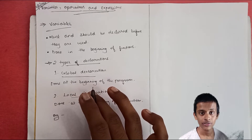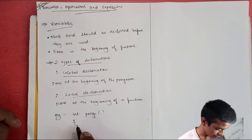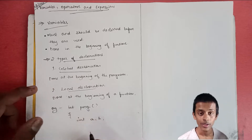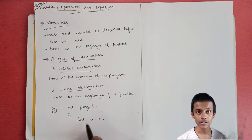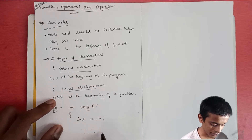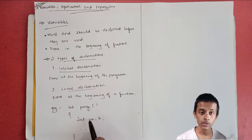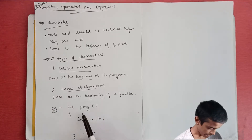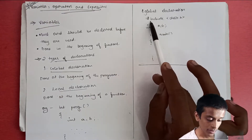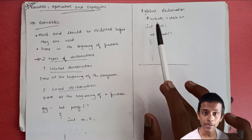Say there's a user-defined function — 'int program' — you open the curly bracket. If you write 'int a, b' here, you're declaring variables a and b as integers. This is done at the start of a function, before any executable statement. This is known as local declaration, because you're doing it at the start of the function.